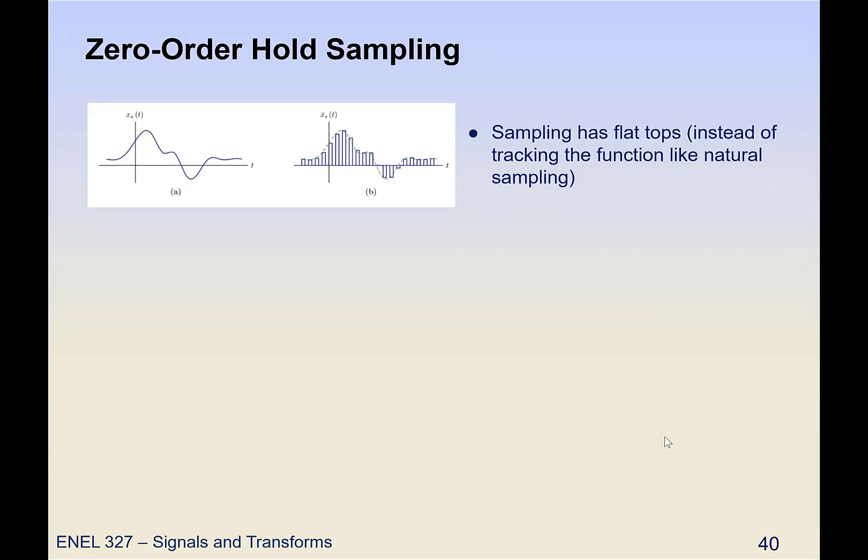Alright. Another way we can do pulse sampling or practical sampling is what's called zero order hold. So note that these samples here have flat tops instead of tracking the function like the natural sampling does. So what it's doing is it's finding the value at a given instant in time and actually just sort of holding that in its register.